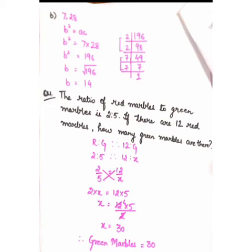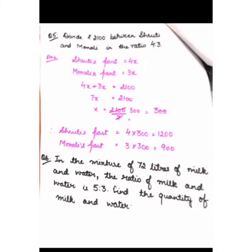Let's start with question number 5. Divide Rs. 2100 between Shruti and Monali in the ratio 4:3. Shruti's part is 4x and Monali's part is 3x. Adding both parts: 4x + 3x = 2100, so 7x = 2100. Transposing 7: x = 2100/7, and 7×3 = 21, so x = 300.